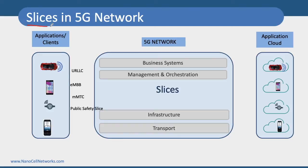In slicing, we have something called management and network orchestration. Based on automation, machine learning, and artificial intelligence, the whole network is divided into something called slices. Slices are basically logical parts of a single physical network, and the services are decoupled from the underlying infrastructure.